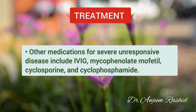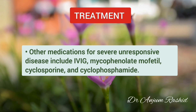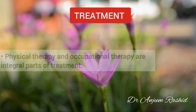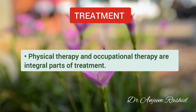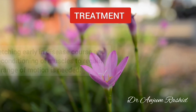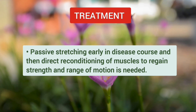Other medications for severe unresponsive disease include intravenous immunoglobulin, mycophenolate mofetil, cyclosporine, and cyclophosphamide. Physical therapy and occupational therapy are also integral parts of treatment. Passive stretching early in the disease course, followed by direct reconditioning of the muscle to regain strength and range of motion, is required.